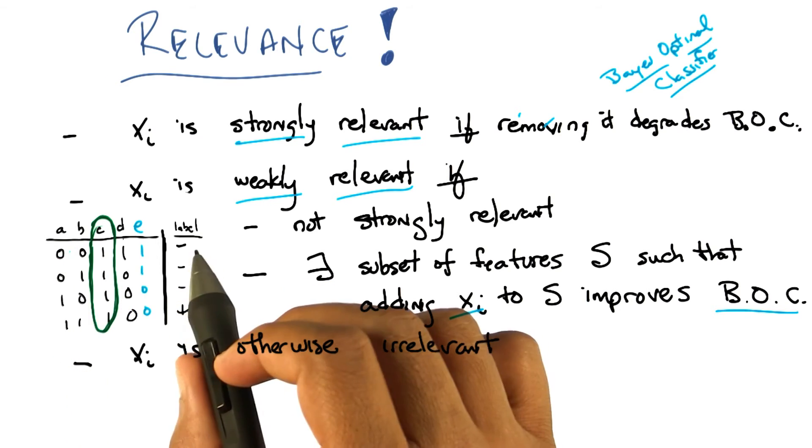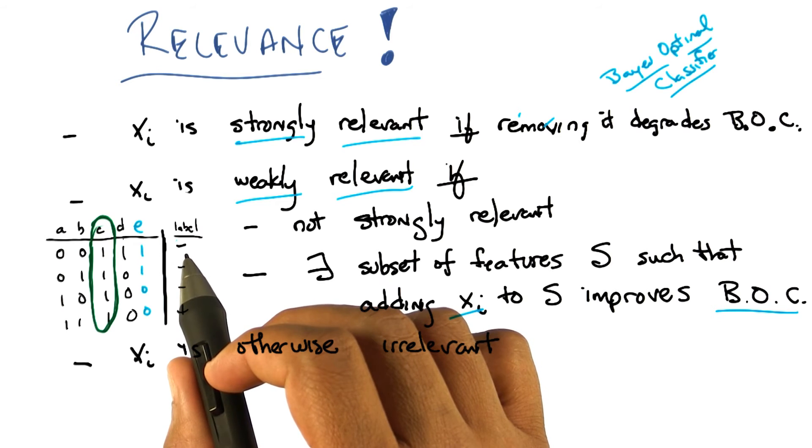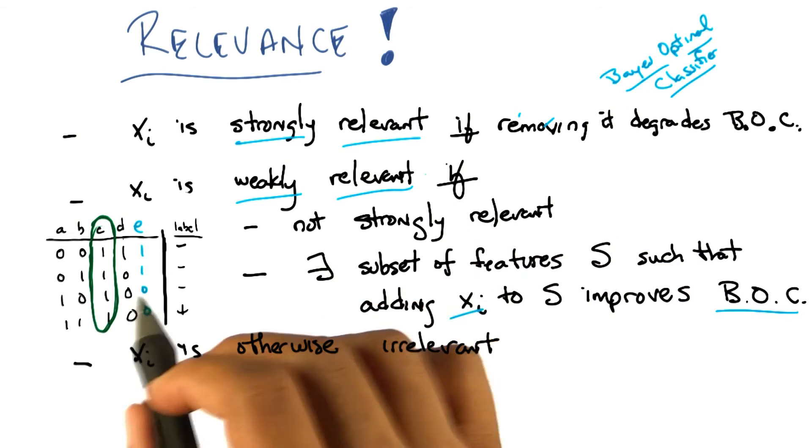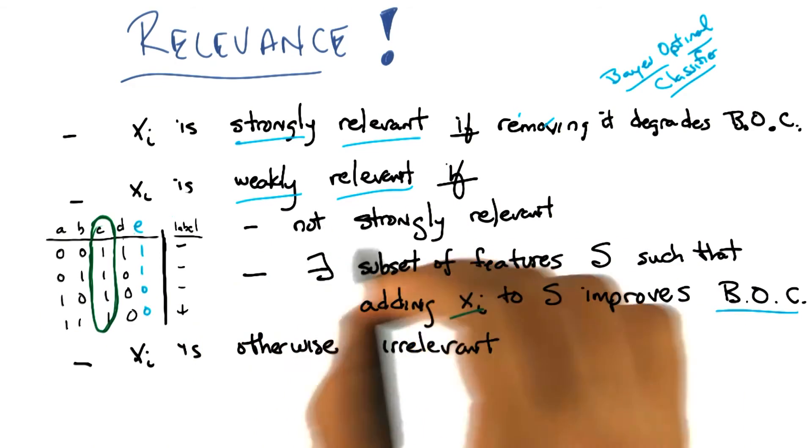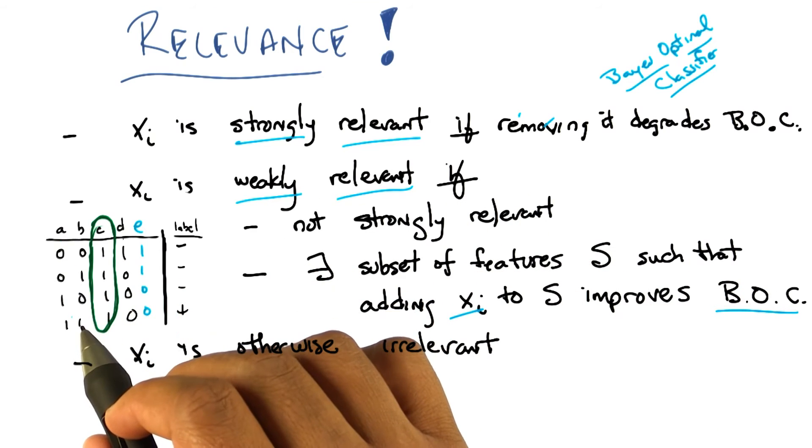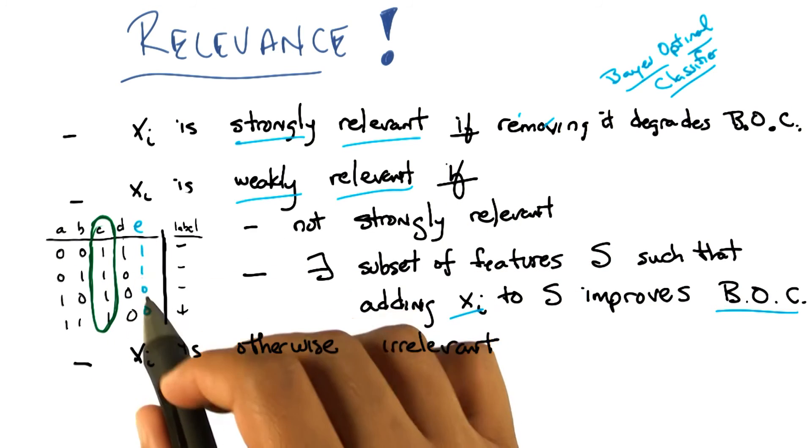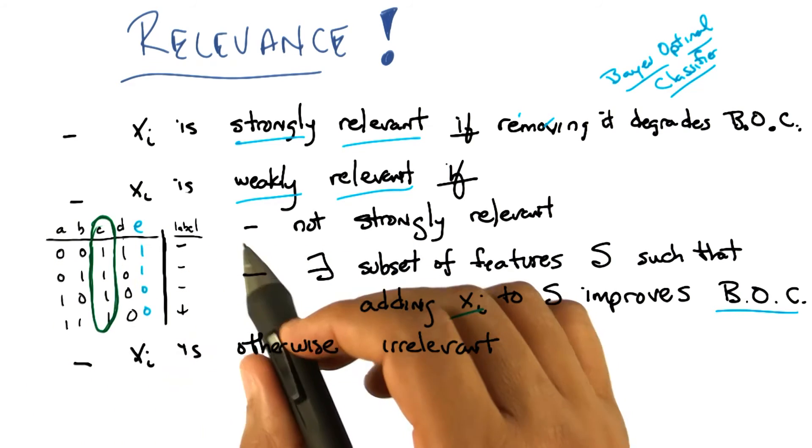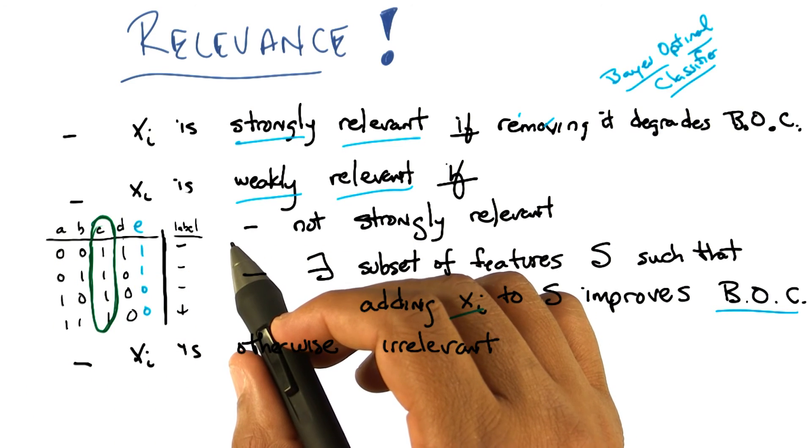Yeah, so then b would be strongly relevant but the other two not. Right. However, both a and e are still weakly relevant because there exists a subset such that adding it back in gives you better performance. In particular, a is weakly relevant for any subset that doesn't include e, and e is weakly relevant for any subset that doesn't include a. And that includes the null set in this case. Yes, exactly.